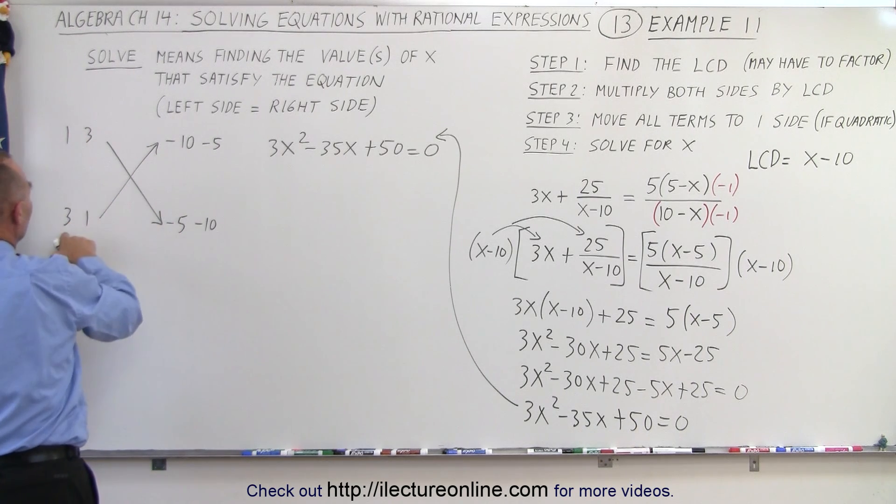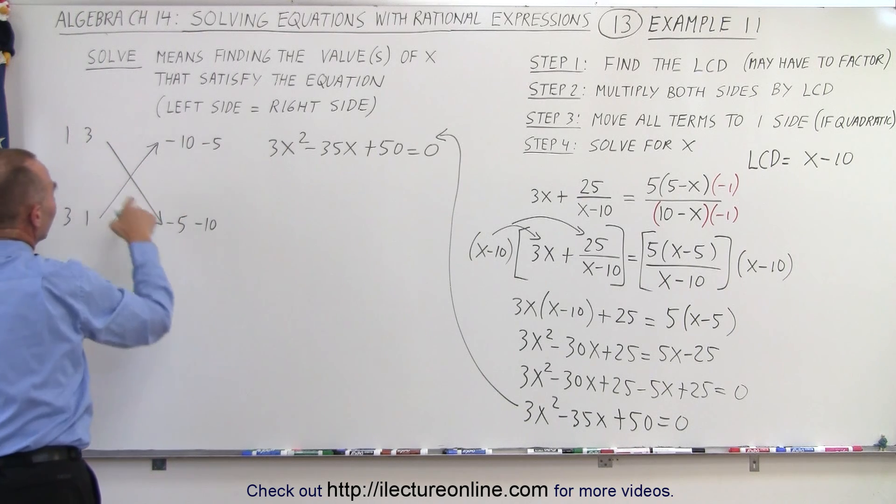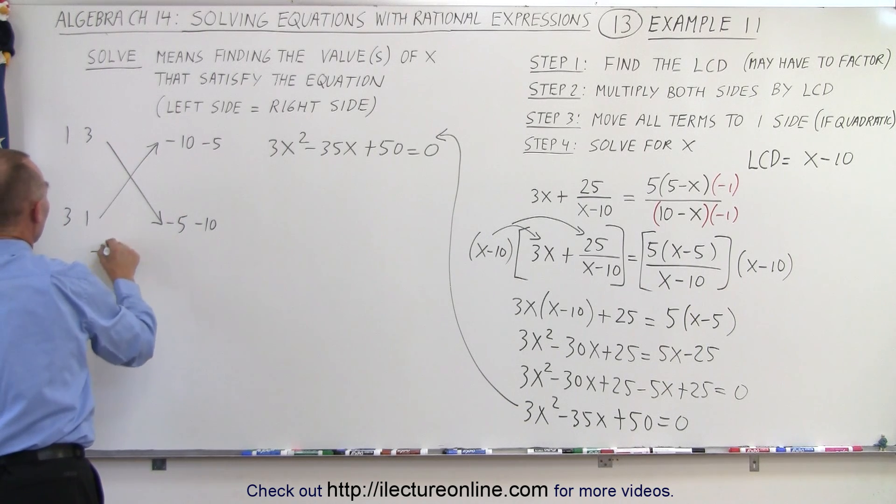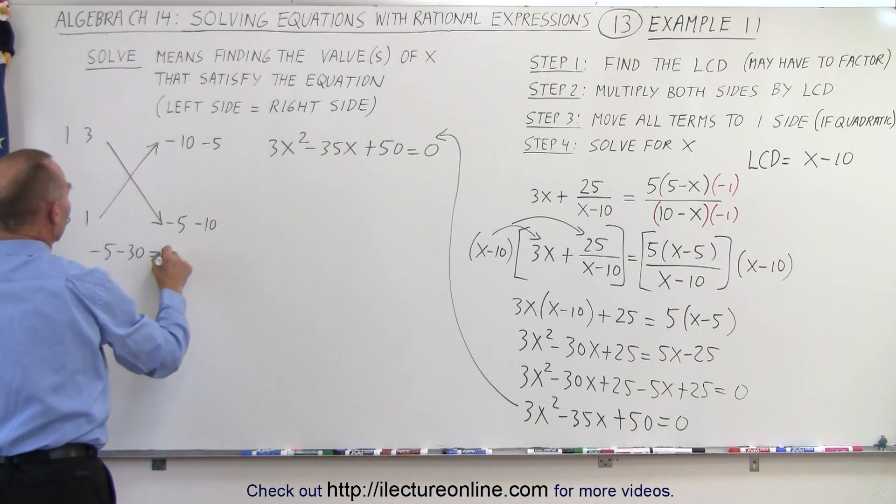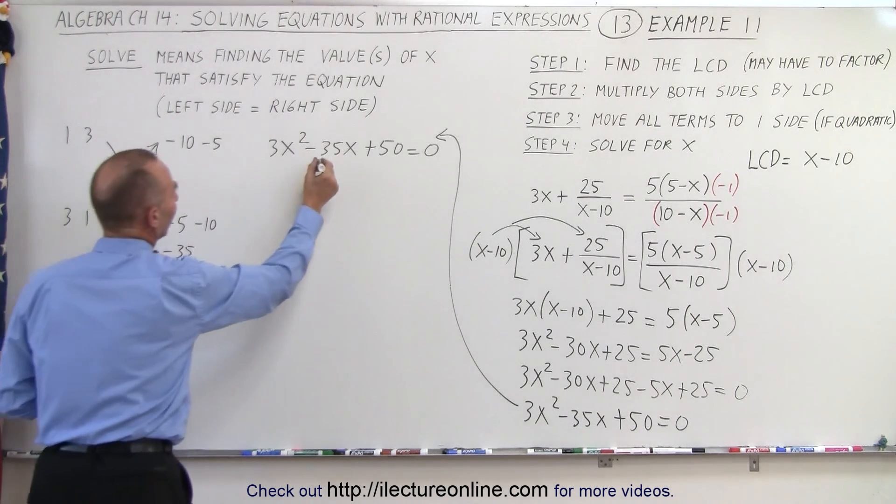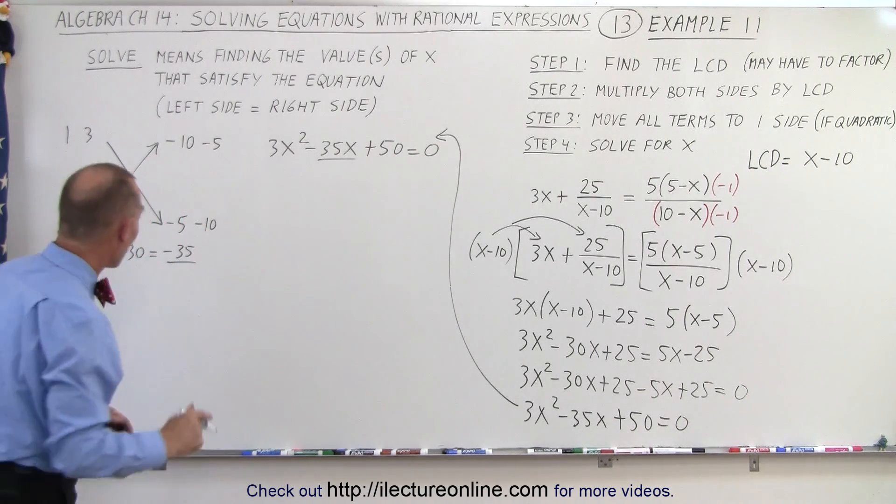Okay, we're going to multiply these with these. 1 times negative 5 is negative 5, 3 times negative 10 is negative 30, add them together, negative 35. And wow, look at that. I've got the middle term right off the first try.